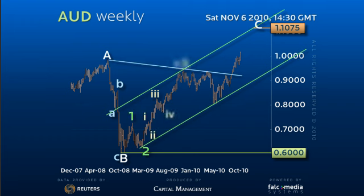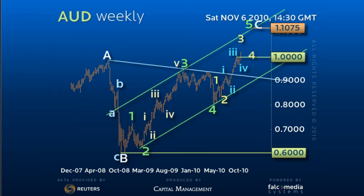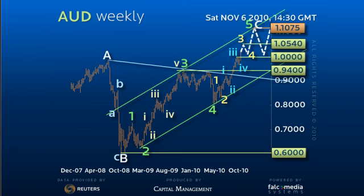Indeed, the recent break of parity provides a window for continued strength while holding parity to a 5 equals 1 target of 1.0540. A break back below parity does allow a return to 96.50 before higher. So only a loss of the previous double top at 94 reverses back to the safety of 80.65.